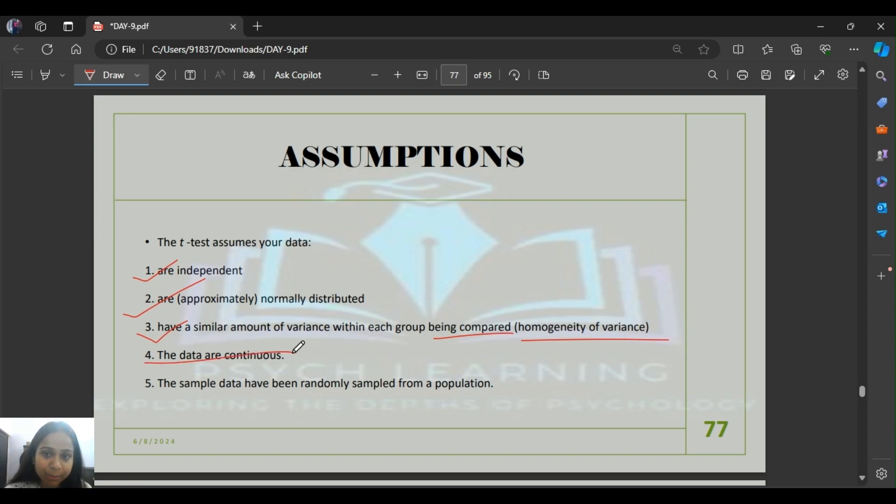T-test assumes your data is independent, approximately normally distributed, has similar variance within each group being compared (homogeneity of variance), data is continuous interval level, and sample data is randomly selected from the population. To understand these assumptions, watch the previous video about parametric and non-parametric tests.